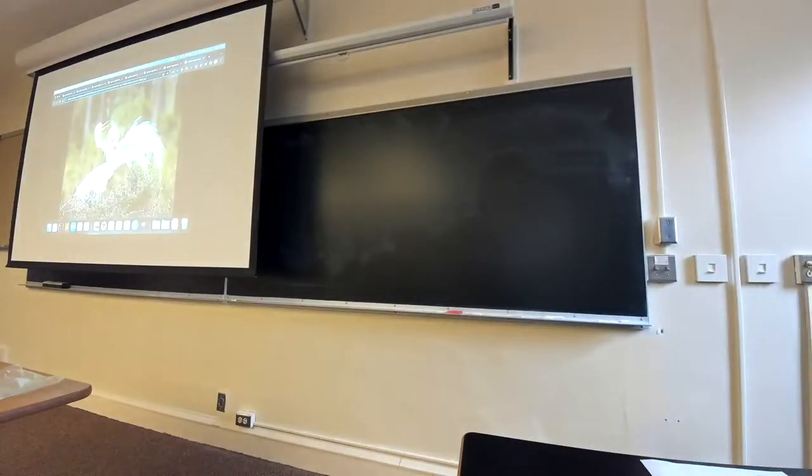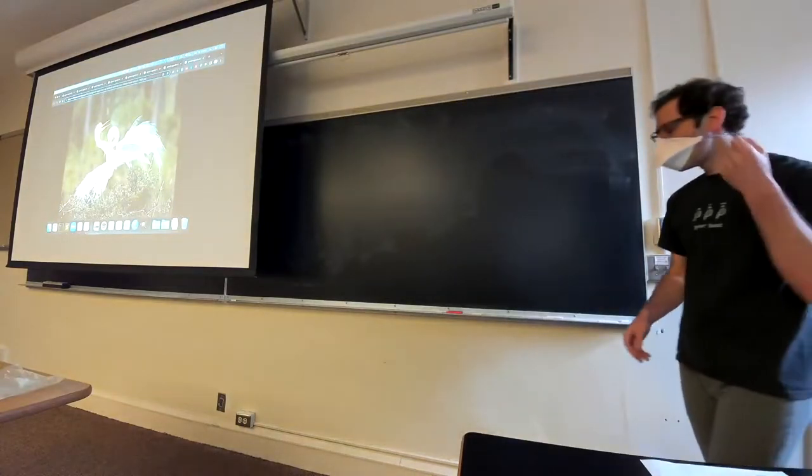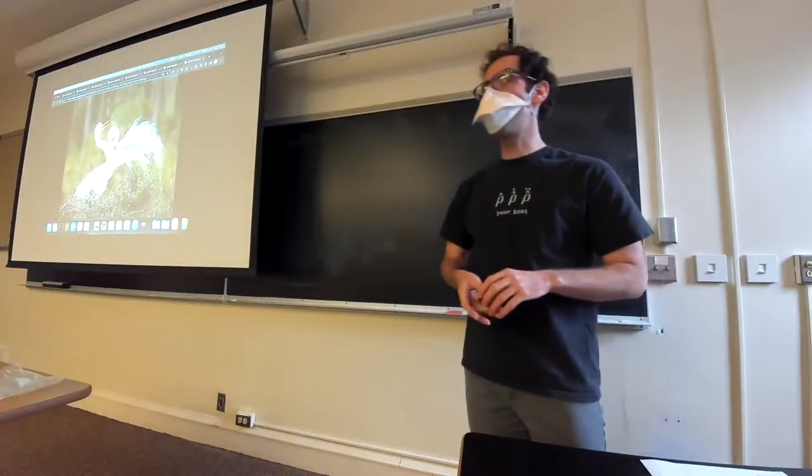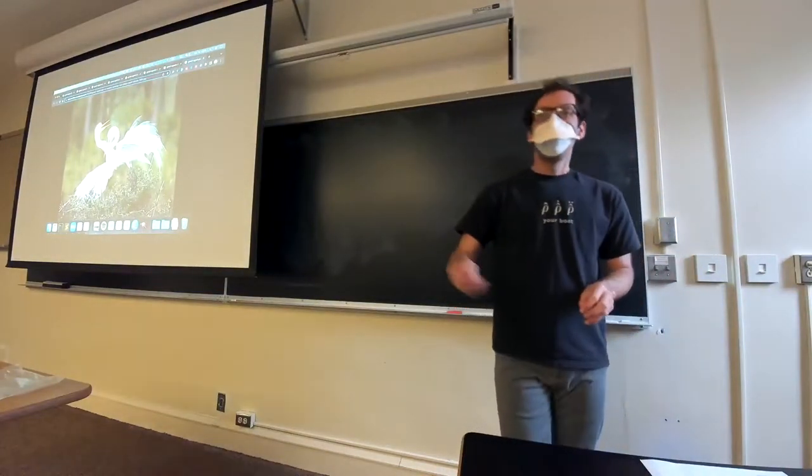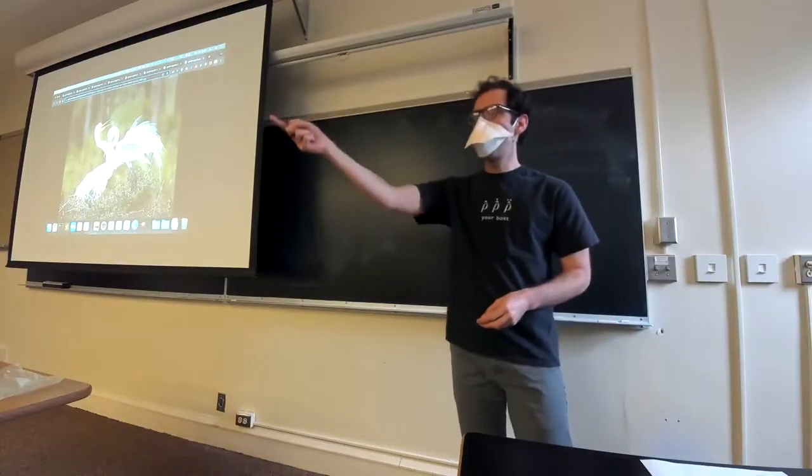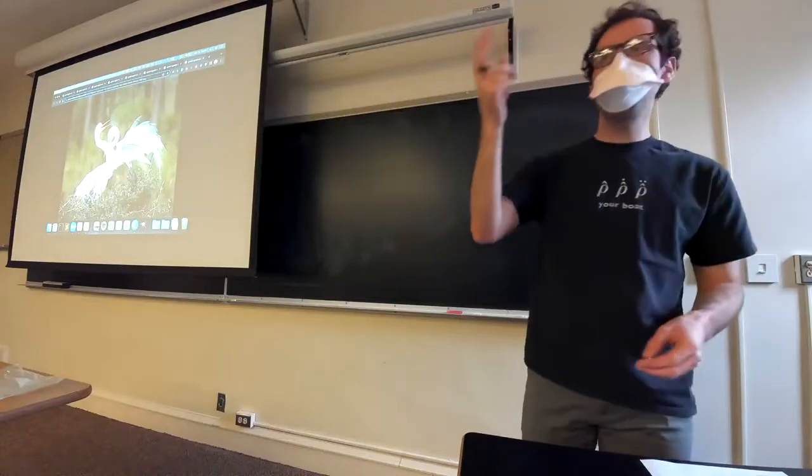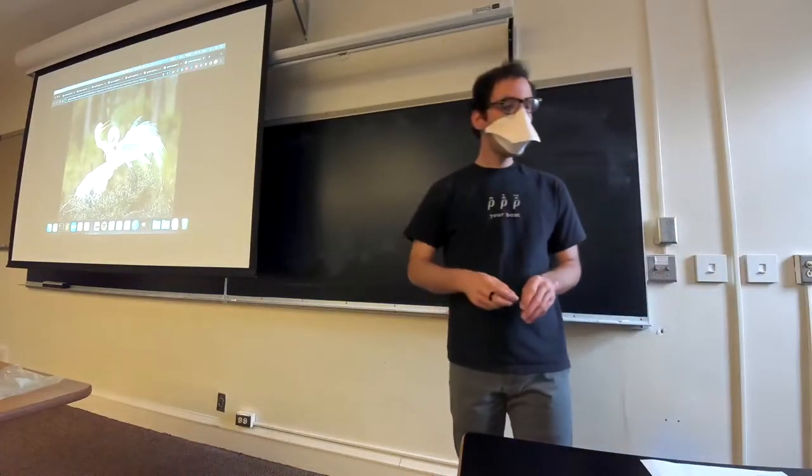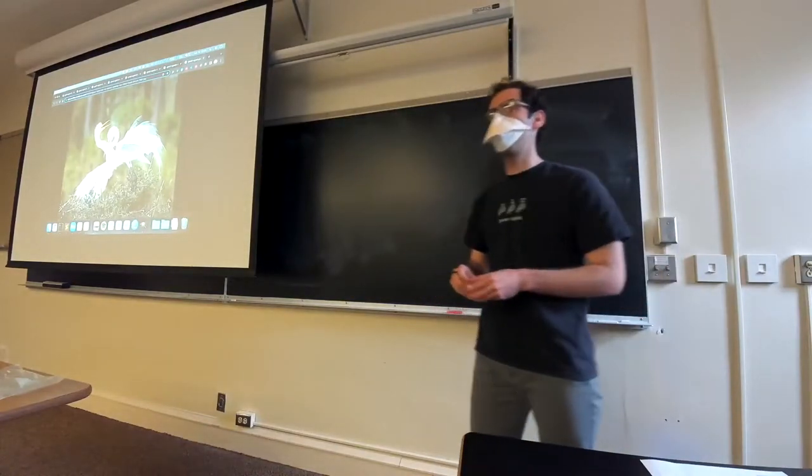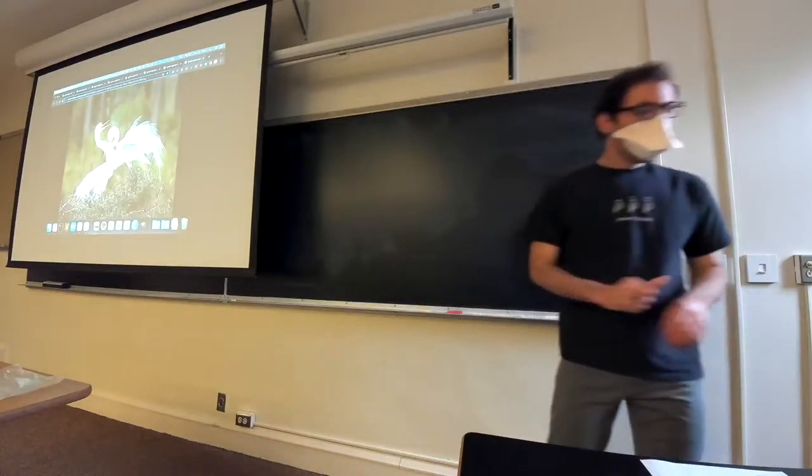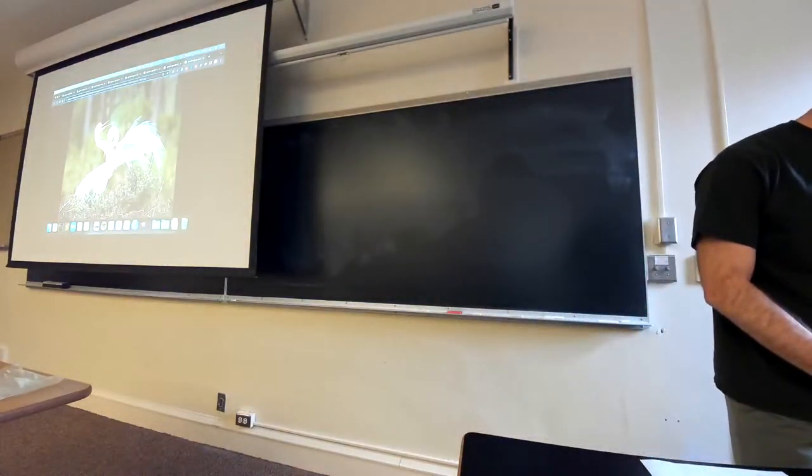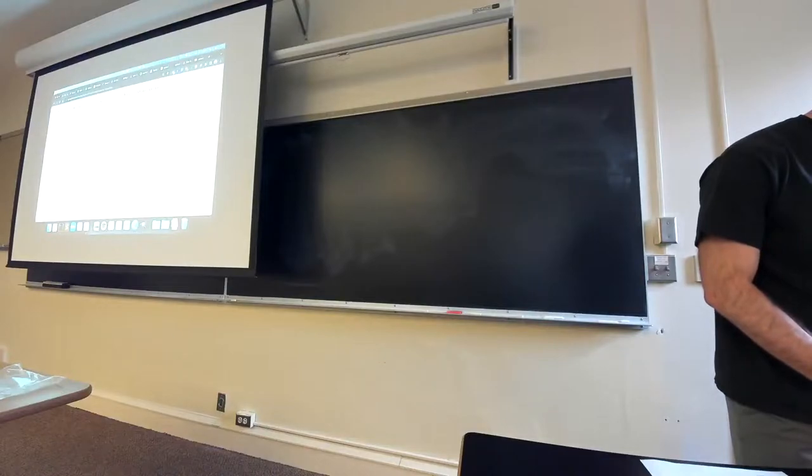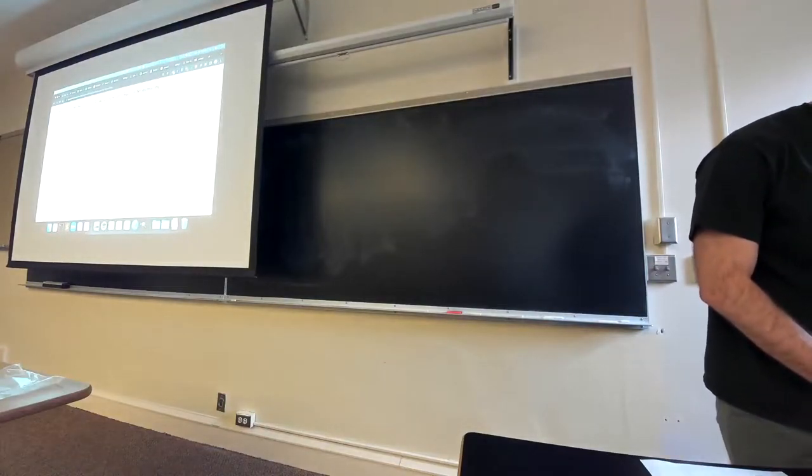It turns out that to do loops doesn't require anything different than what it takes to do conditionals. We still need to be able to check some condition and then jump somewhere else in the code. When it came to conditionals, we were already doing that, and that's going to be all we need for loops. Through this, we will see the use for the other two kinds of jump instructions that I mentioned on Friday.